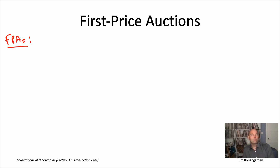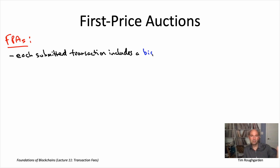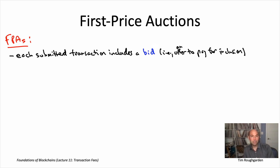In a blockchain protocol that uses a first price auction to select transactions, you as the creator of a transaction, when you submit it into the network, are responsible not just for providing things like your digital signature — you're also responsible for offering a bid: how much you would be willing to pay for your transaction to be included in the blockchain and executed. That bid is denominated in the protocol's native currency, which is obviously very convenient.